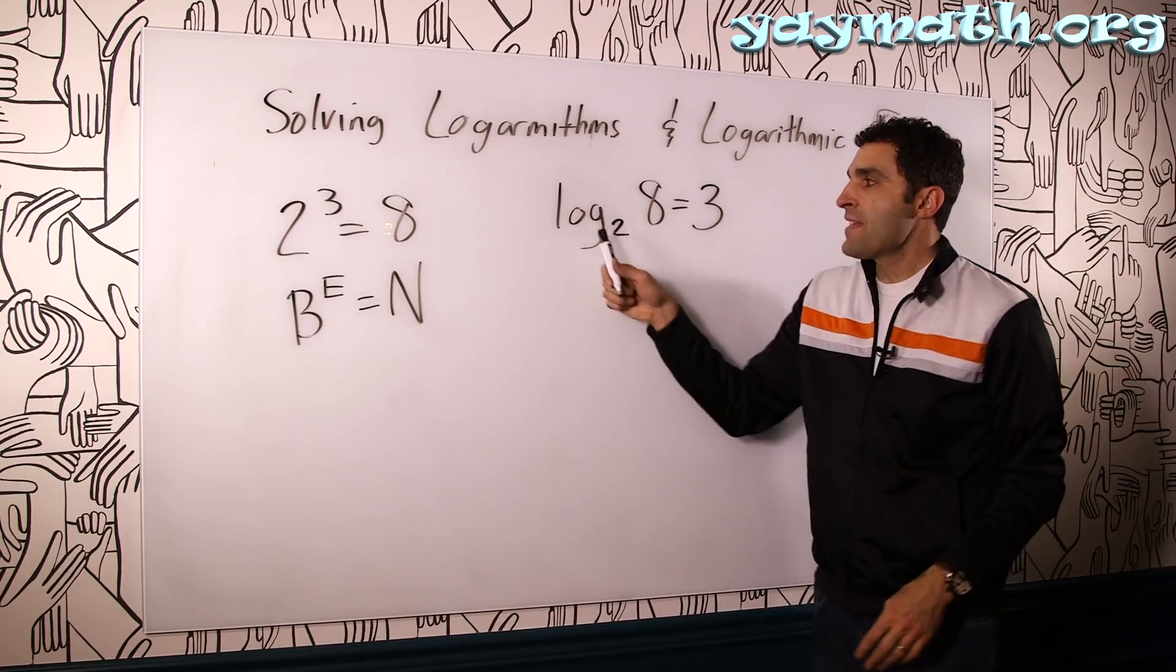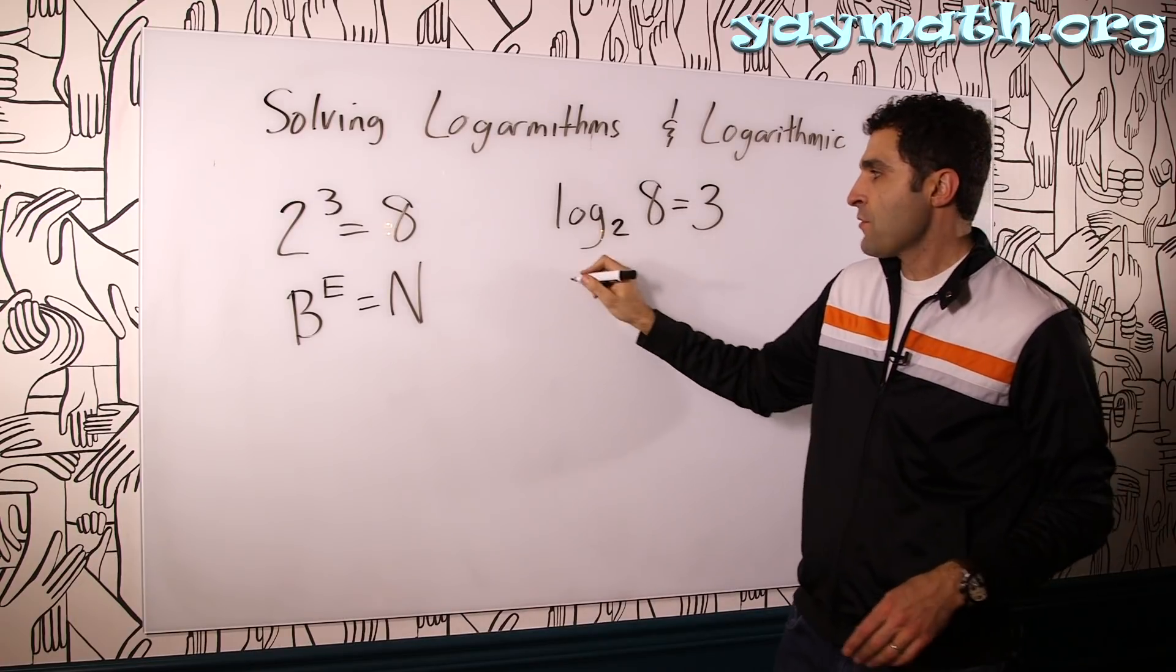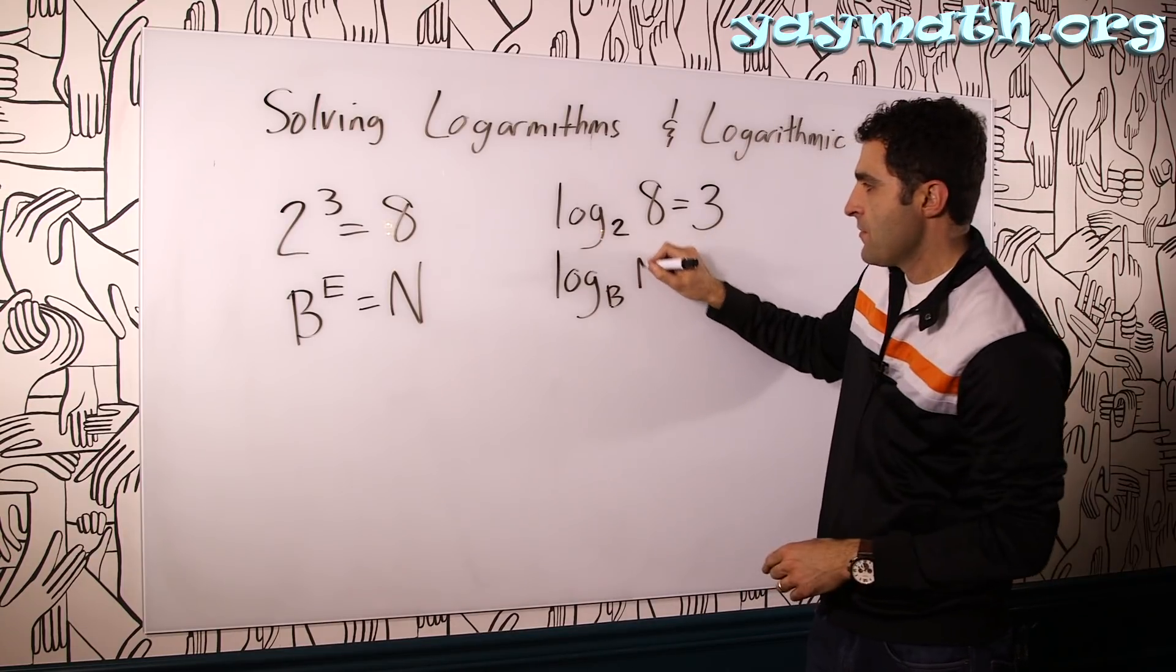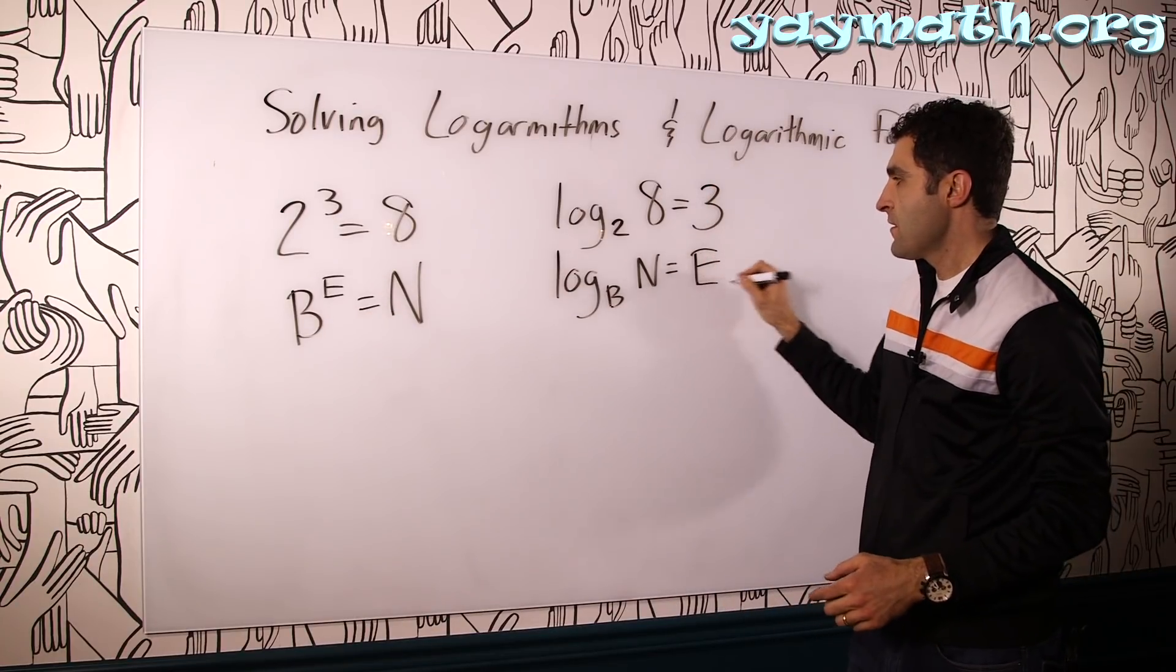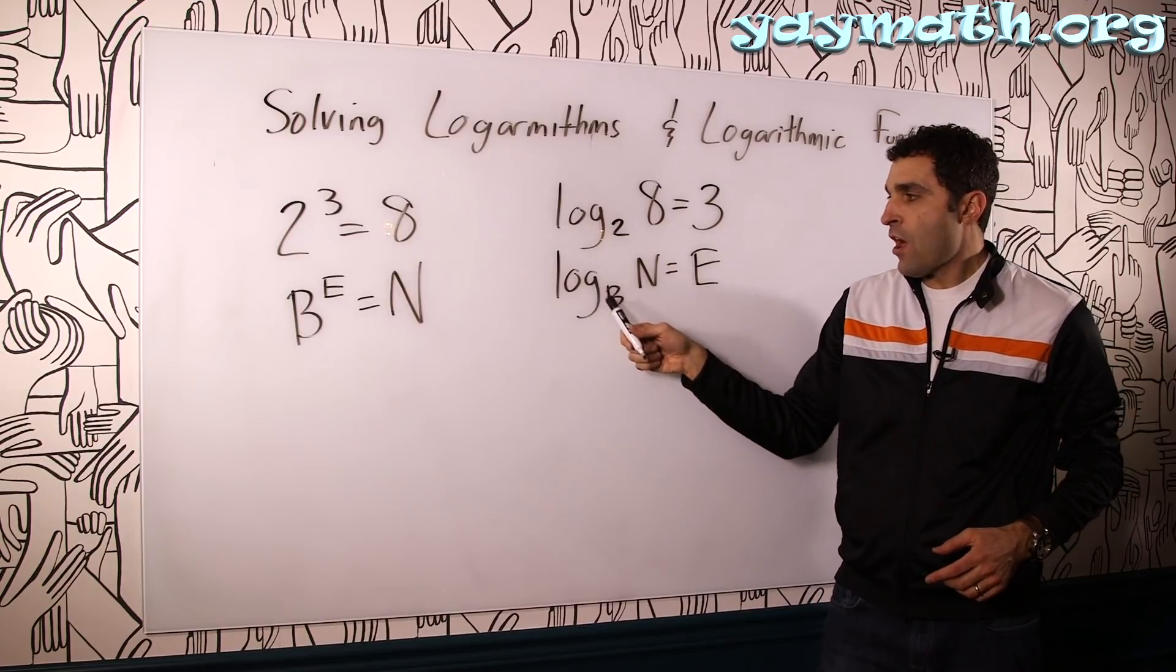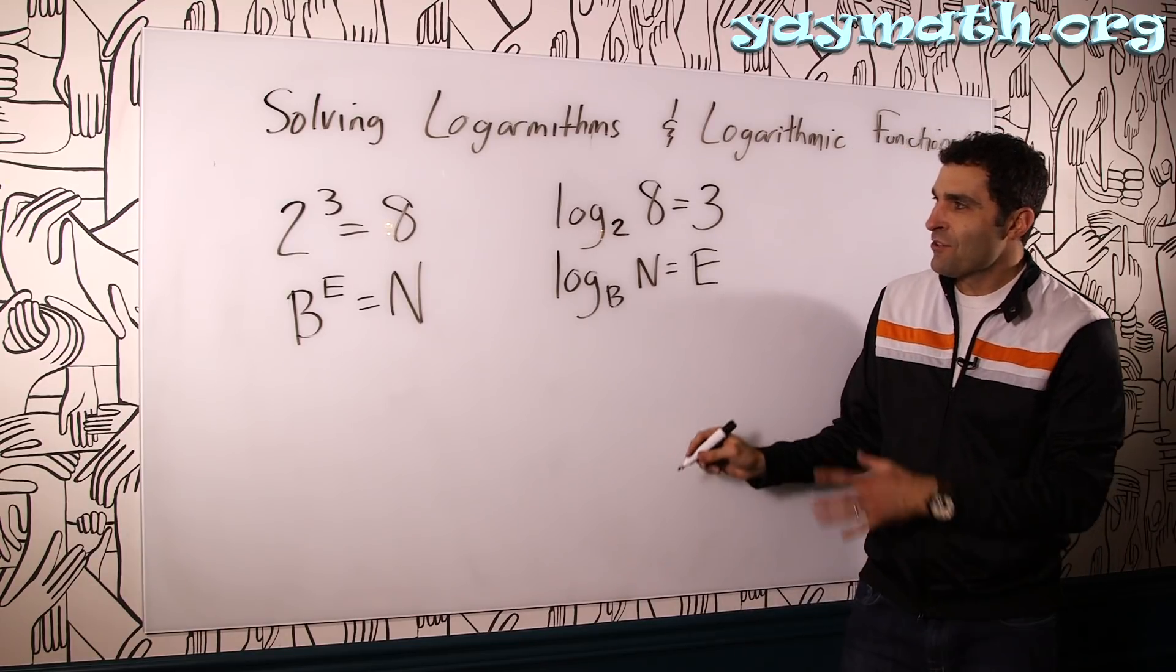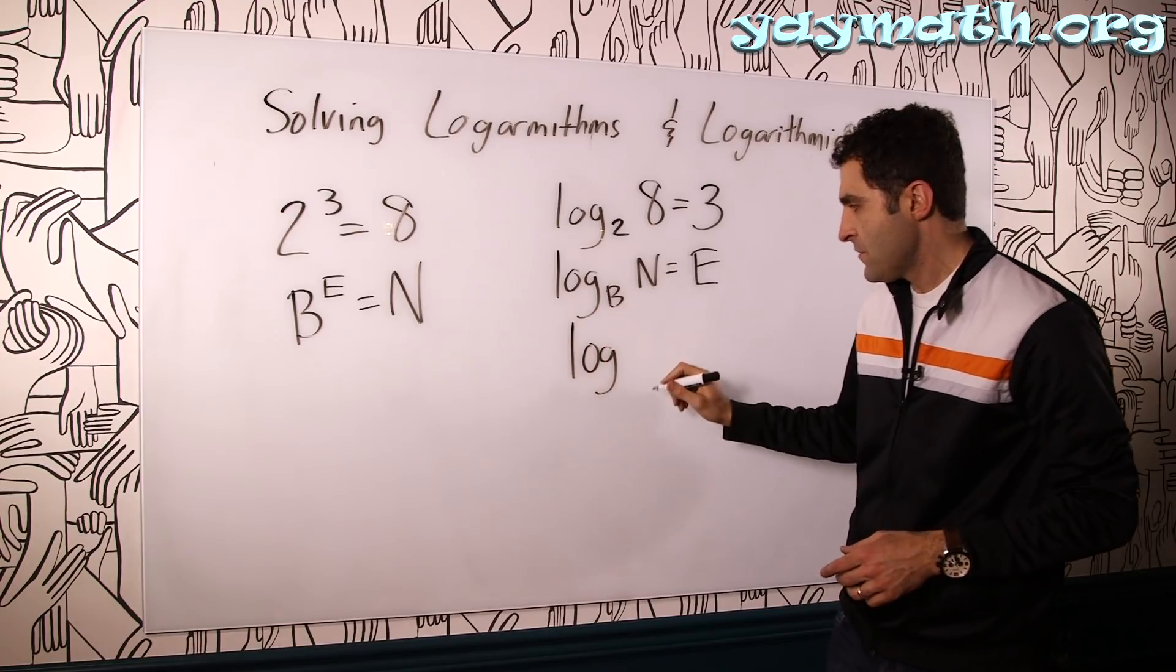So this is, again, the way we say it: Log base 2 of 8 equals 3. Let's put it in general terms. This is log. Base goes here. 2 is the base. 8 is the number. N goes here. 3 is the exponent. That goes here. Ben and logbanet, if you will. Logbanet. Hello, logbanet. This is your friend, Ben. Get along. So let's come up with other logs and see if you can decode them.